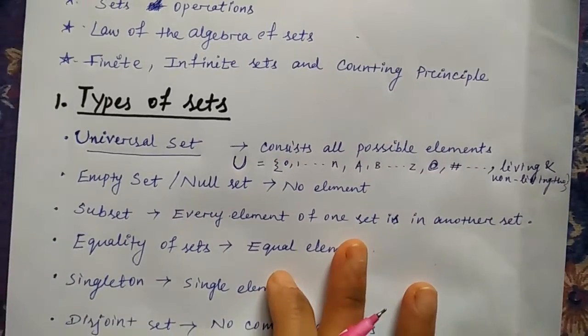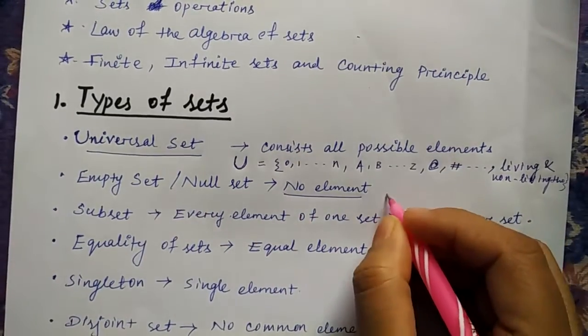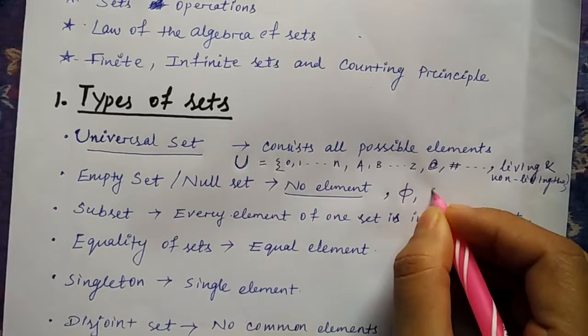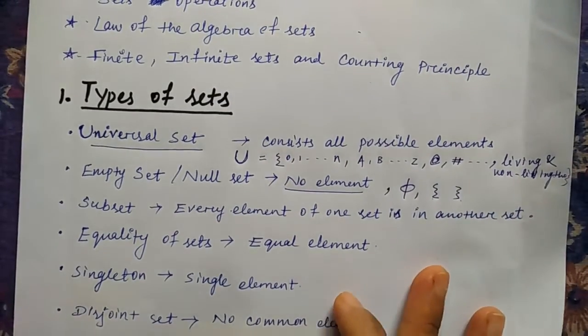Next is the empty set. Empty set or null set is the set which is having no element. So it is denoted as either phi or the set which is starting and closing with the curly braces.